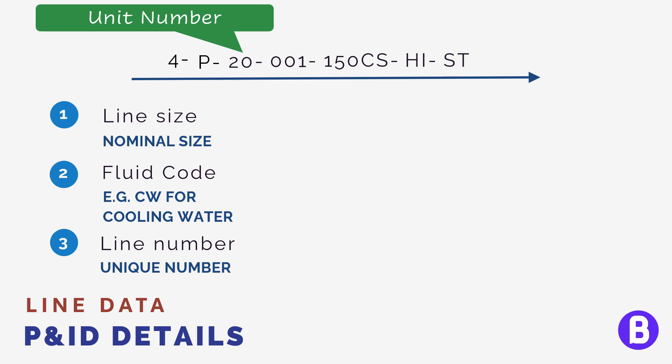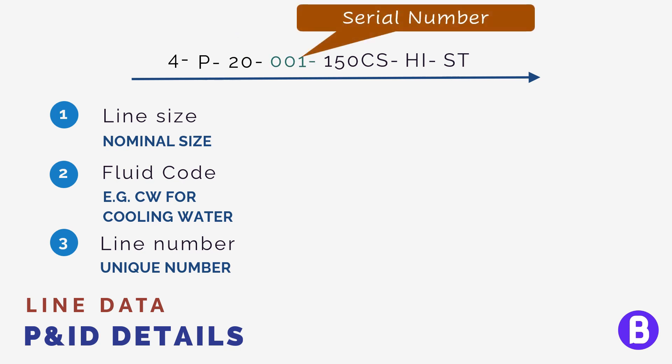Here for example, it is 20. For example, for the vacuum distillation unit, we shall add 20 here. So a line in the vacuum distillation unit shall have 20. Then we shall add the serial. So the serial line shall be for example 001. So the total line number for first line in the vacuum distillation unit shall be 20-001.